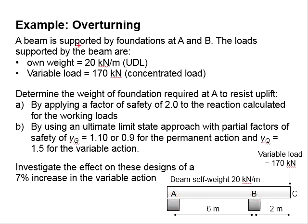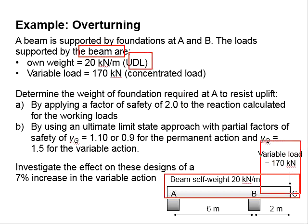The loads supported by the beam include its own self-weight, which is 20 kN per meter UDL, and a concentrated variable load of 170 kN.